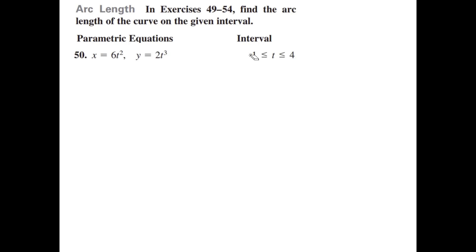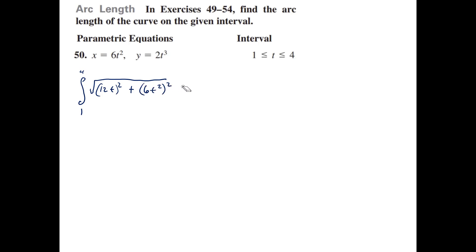In exercises 49 through 54, find the arc length of the curve on the given interval. We want the arc length from t equals 1 to t equals 4. By the theorem, this is the definite integral from 1 to 4 of √((dx/dt)² + (dy/dt)²) dt, where dx/dt is 12t² and dy/dt is 6t², giving √(144t⁴ + 36t⁴) dt.